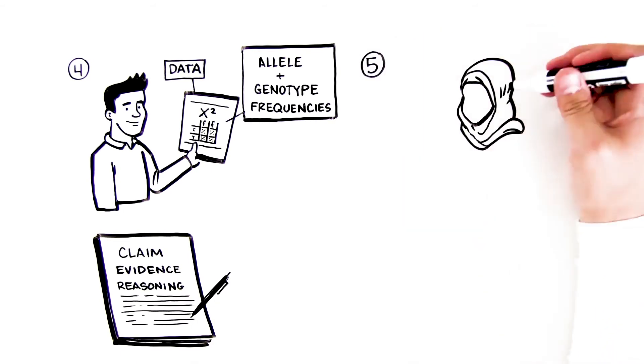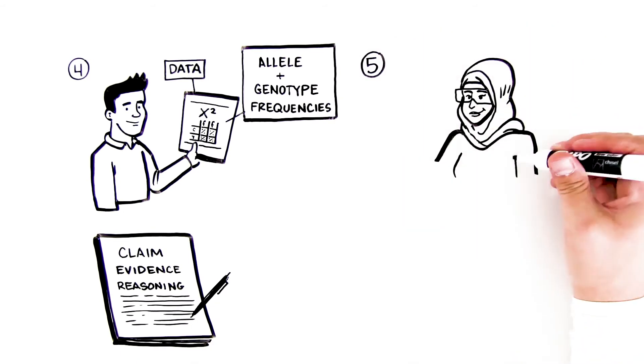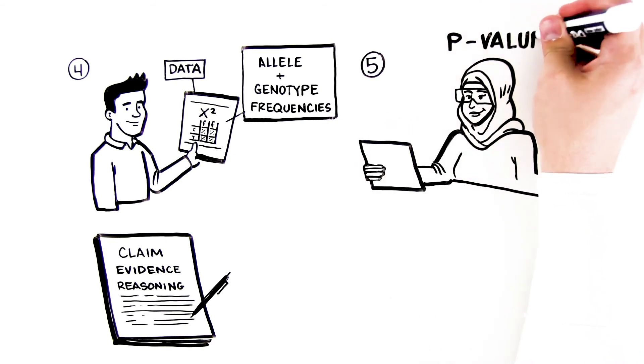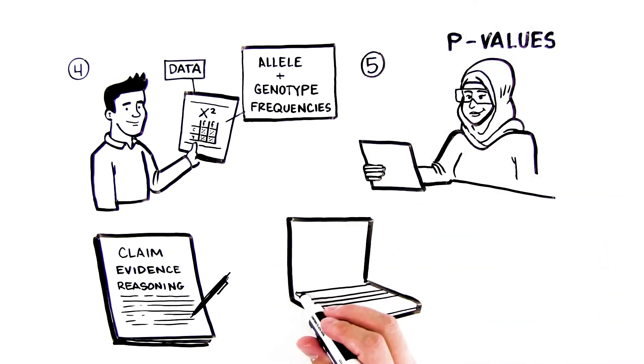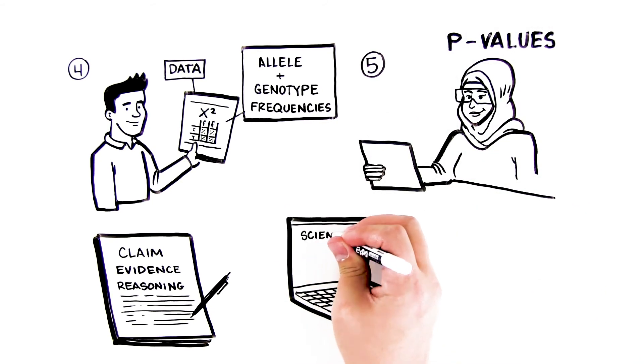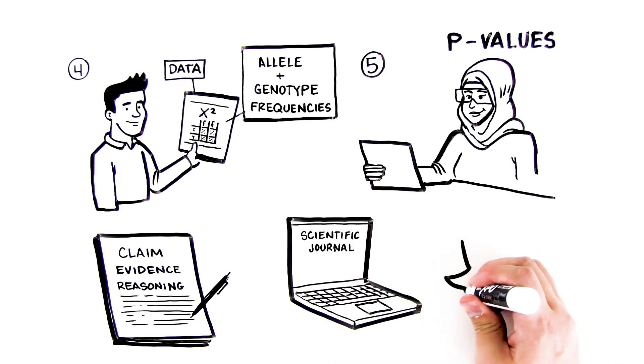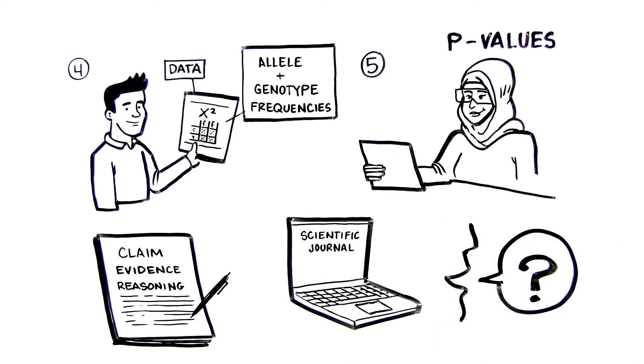Activity 5 provides students with the opportunity to learn the concept of probability values, p-values, analyze published data about multiple genes, and reassess their claim. The activity closes with students discussing the broader questions of what should be done to address the opioid crisis.